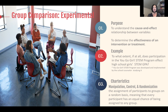Some researchers and texts say you need to randomly select from a population. Others say you just need random assignment, which involves assigning group participants on a random basis to your different groups — to your treatment group and your comparison or control group — so that everyone in your sample has an equal chance of being assigned to either group.